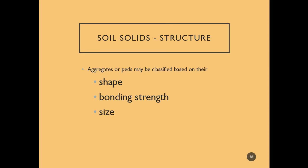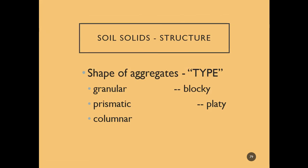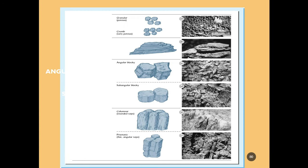Aggregates are classified based on their shape, the strength of their bond, and their size. The shape of aggregates determines their type. At the top we have granular soil, then platy, angular blocky, subangular blocky, columnar, and prismatic.